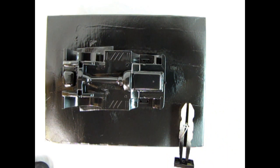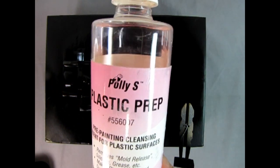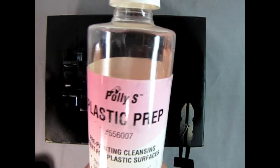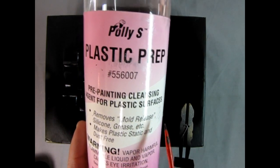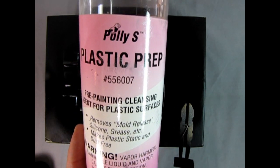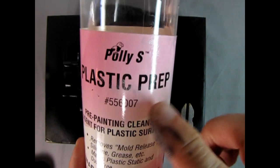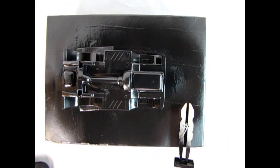Now I was joking about the spray adhesive, but this is something that you can actually use that does help. This is Poly S Plastic Prep. Now I'm not sure if this is actually still being made, but you can see what it says here. Pre-painting cleansing agent for plastic surfaces. Removes mold release, silicone grease, etc. Makes plastic static and dust free. So if you can find this in your hobby shop, I'd recommend picking it up. Now you can see my finger got painted here a little bit. That's from the cap of the spray cans. I'm using some trim clad flat black and semi-gloss black paint. So I'll let this dry up and we can actually work on the chrome components.